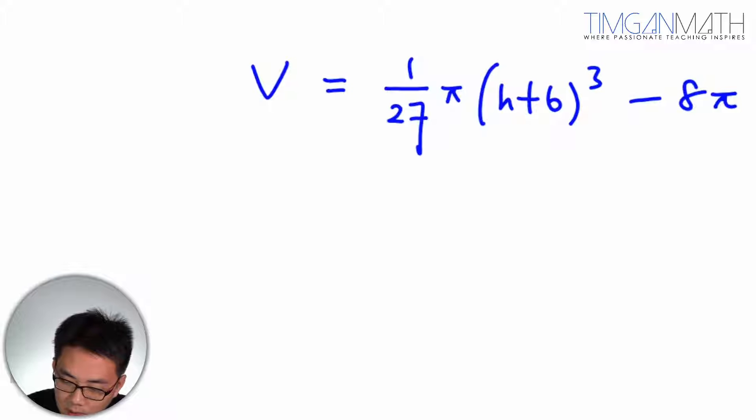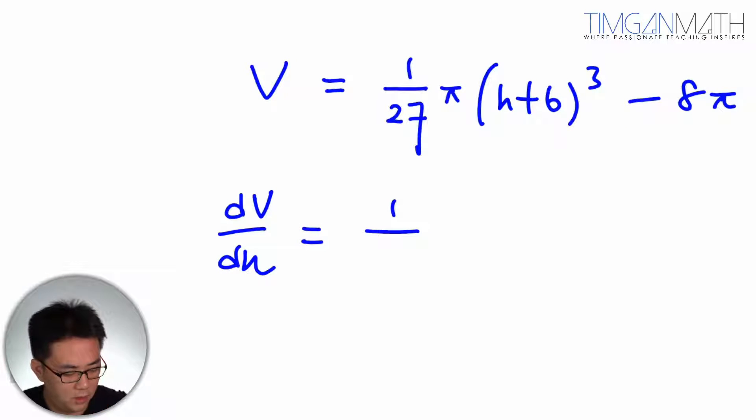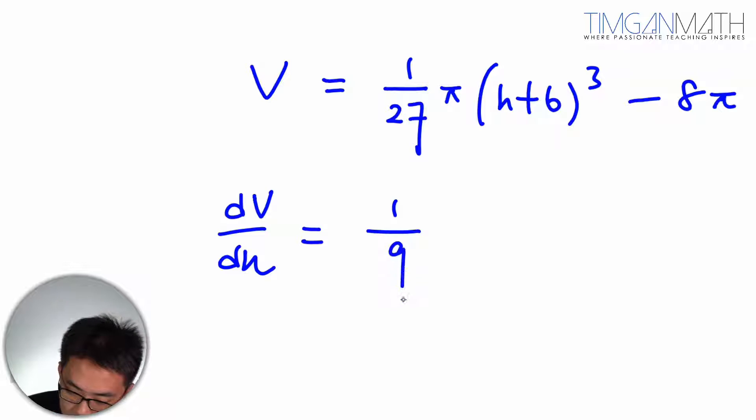So dV/dh would be, taking the derivative, 1/27 times π times 3 times (h+6)², which simplifies to π/9 (h+6)².